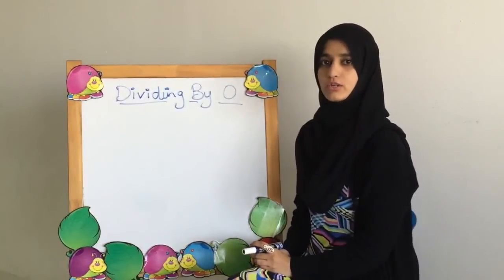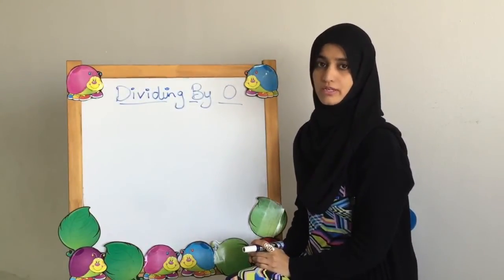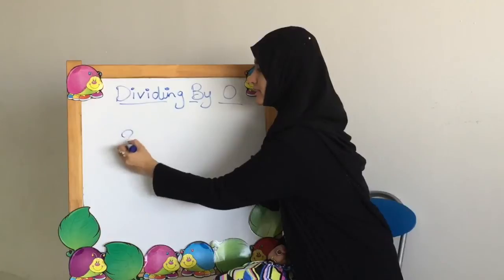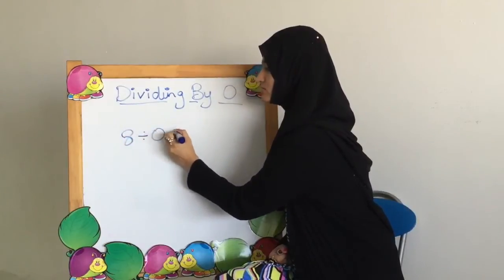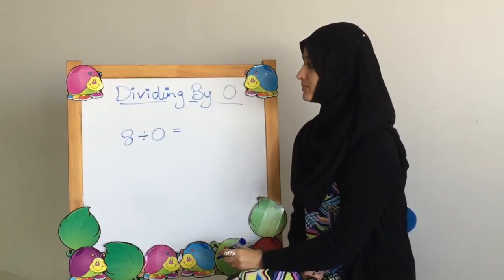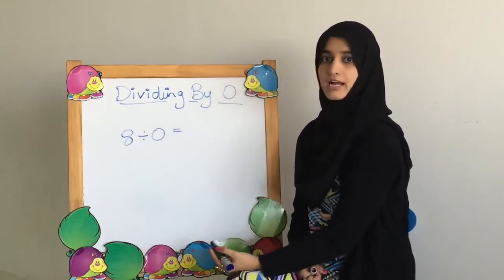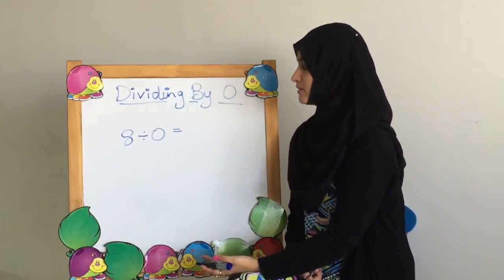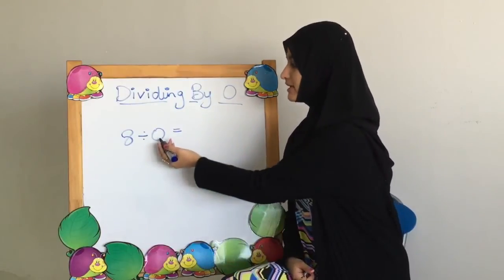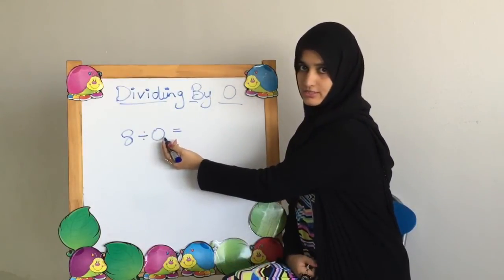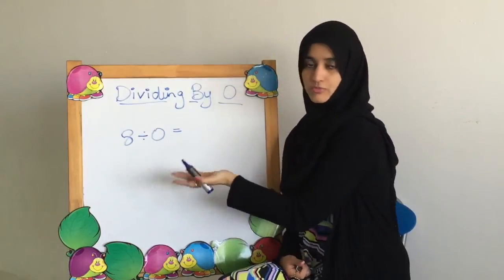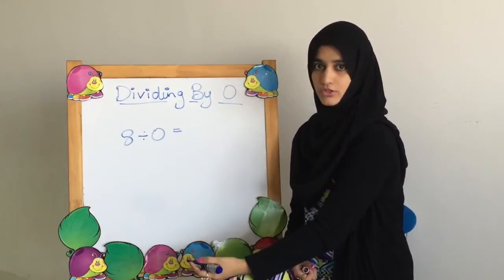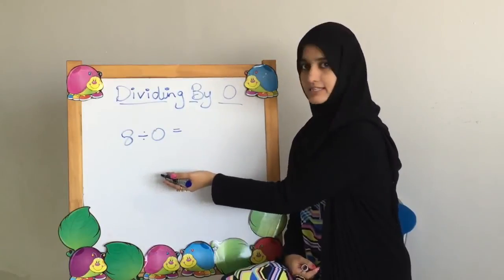Now we are going to see what happens when the divisor — the number we are dividing by — is 0. Let's take an example: 8 divided by 0. We have 8 things to distribute and we have to distribute them among 0 people or 0 boxes. When we look at the second number, we see we have to make 0 sets. When we make 0 sets, which means nothing, what is going to be the set size? The set size is also going to be 0, because there were 0 sets.